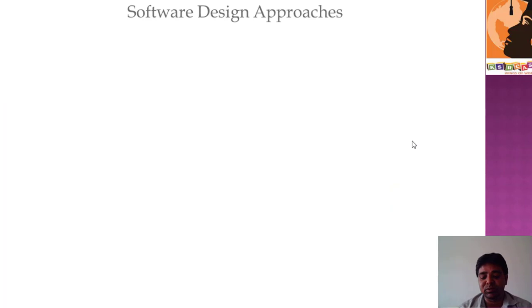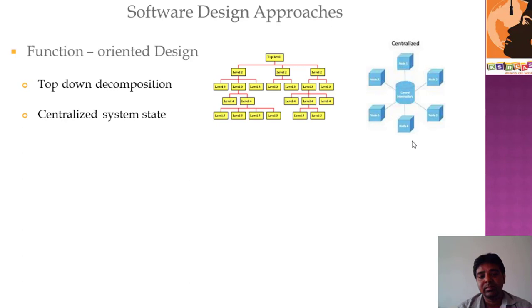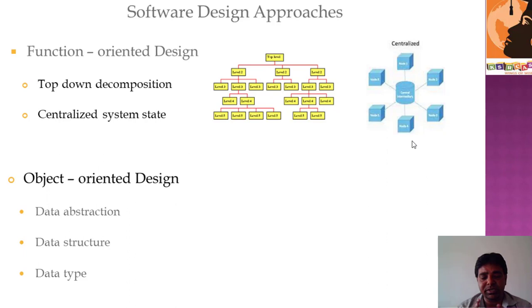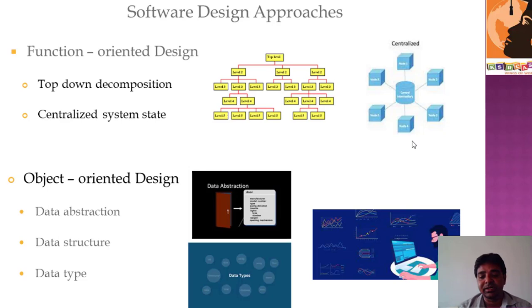Finally, talking about software design approaches — function-oriented design and object-oriented design. Function-oriented design has two techniques: top-down decomposition, where modules are completed from the top level downward, and centralized design, where all modules connect to a main module. Object-oriented design, which you would have learned through programming languages like C++ and Java, involves data abstraction, data structure, and data types, with representing diagrams. Thank you all — we'll meet in regular classes where elaborate explanations of all these topics will be given.